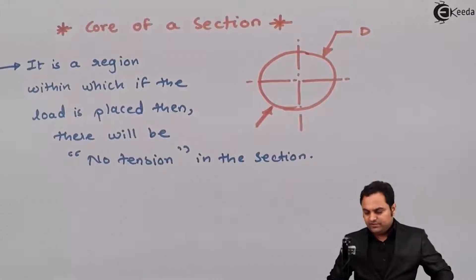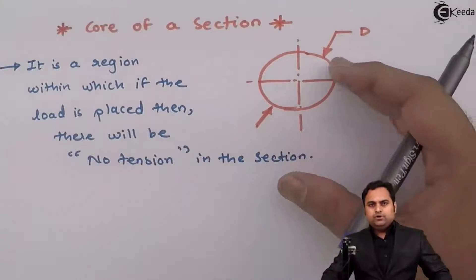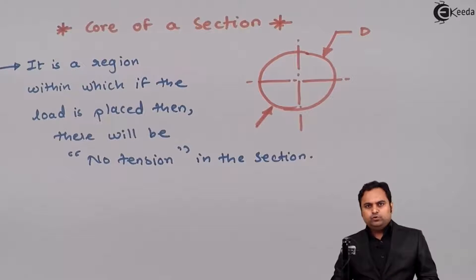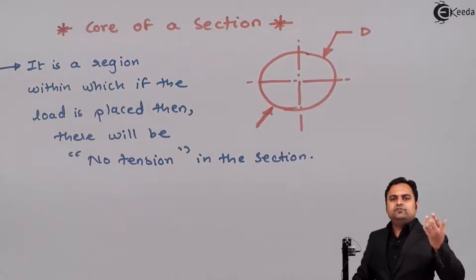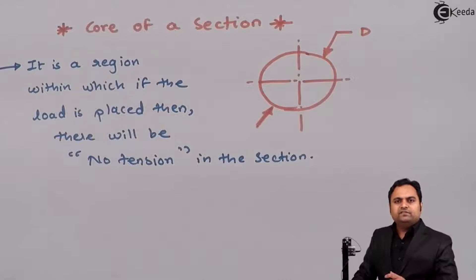Suppose this cross section of a circle is a column. We need to find out where the load is to be placed on the column so that there is no tension, because if tension is there then the column will be removed from its foundation due to tensile stress.